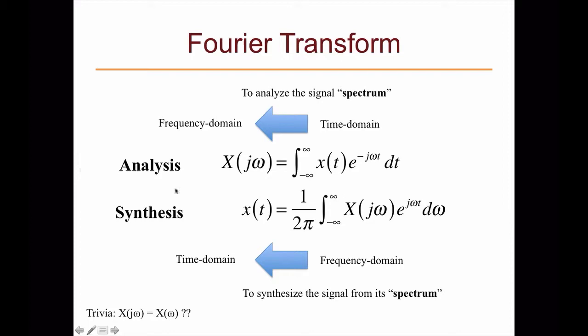We can use the analysis equation to analyze the signal spectrum, transforming the signal from the time domain X(t) into the frequency domain X(jω). We can also use the synthesis equation to transform the spectrum from X(jω), the frequency domain, back to the time domain X(t). It should be noted that the symbol X(jω) represents something like X(jω) in other books. In summary, the analysis equation transforms from time domain to frequency domain, and the synthesis equation reconstructs the signal from frequency domain to time domain.